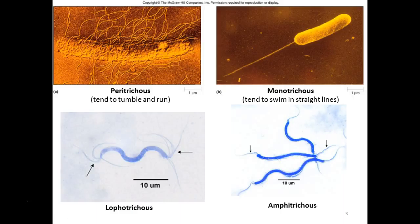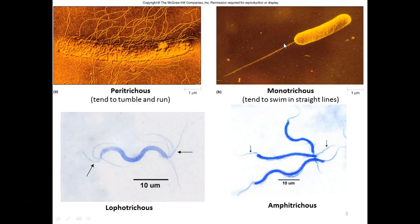I found some flagella slides in a drawer while making room for goggles. I haven't cleaned them up yet, but maybe next week we'll be able to see where they've stained the flagella to make them thicker so you can see them under the light microscope. The pictures shown here are scanning electron micrographs, which is why you can see the tiny flagella.